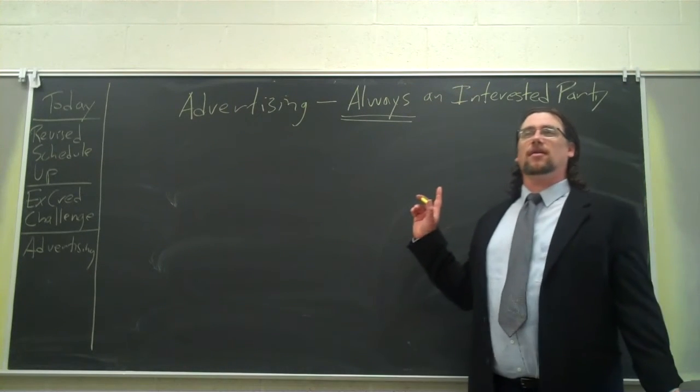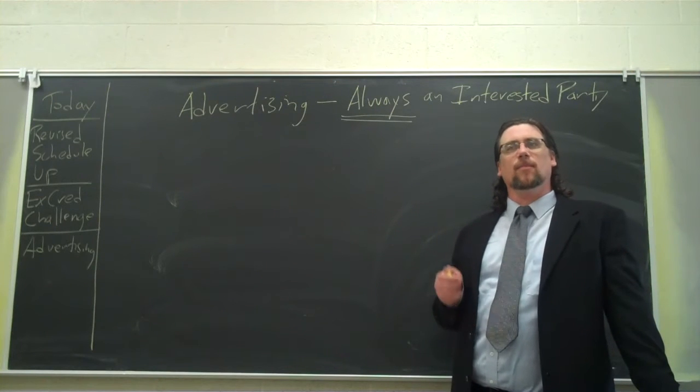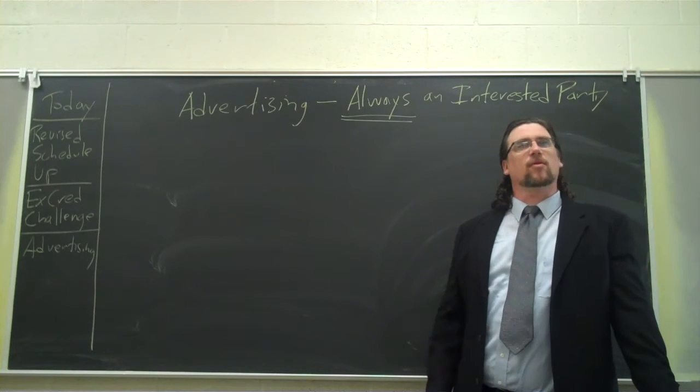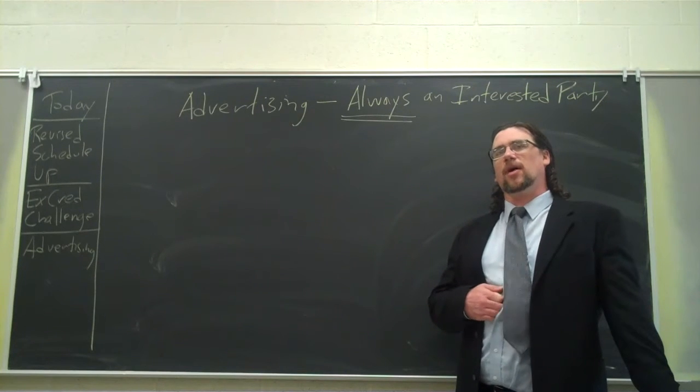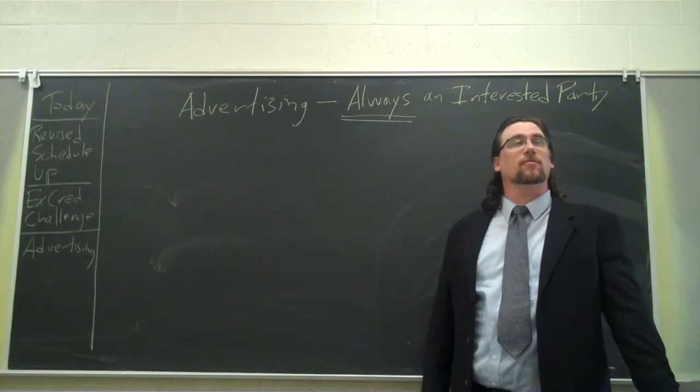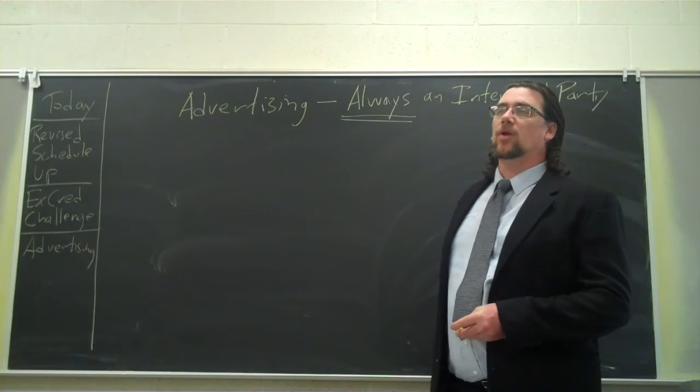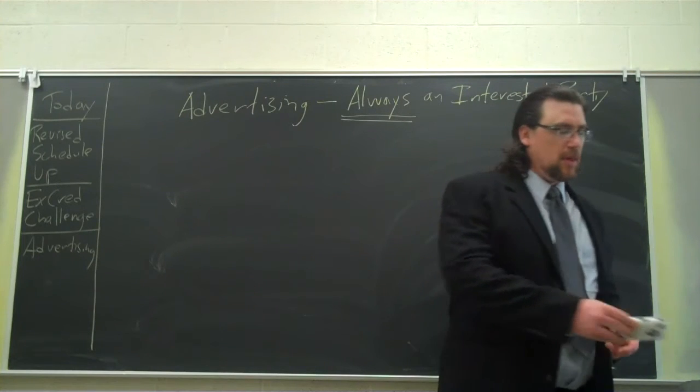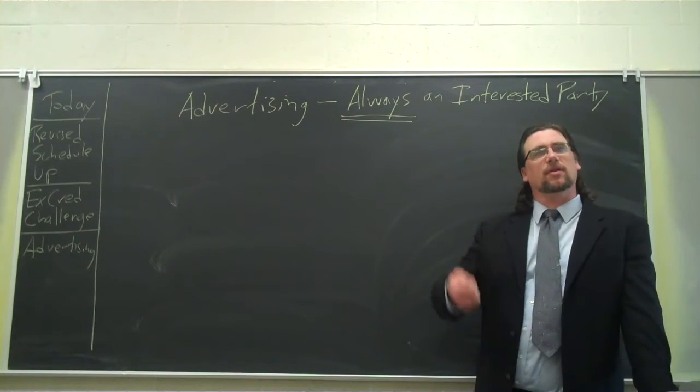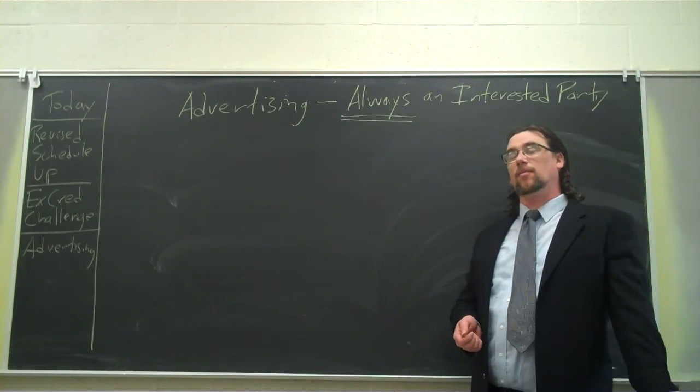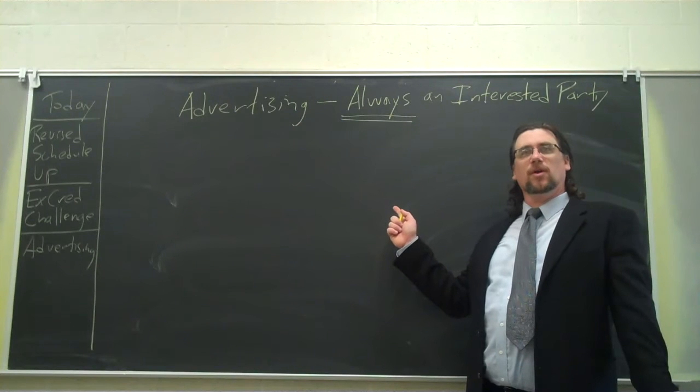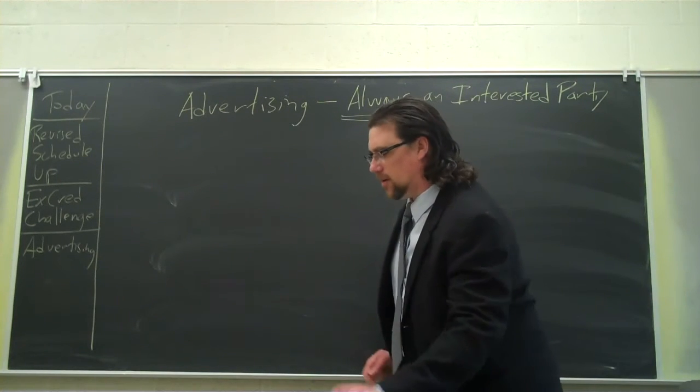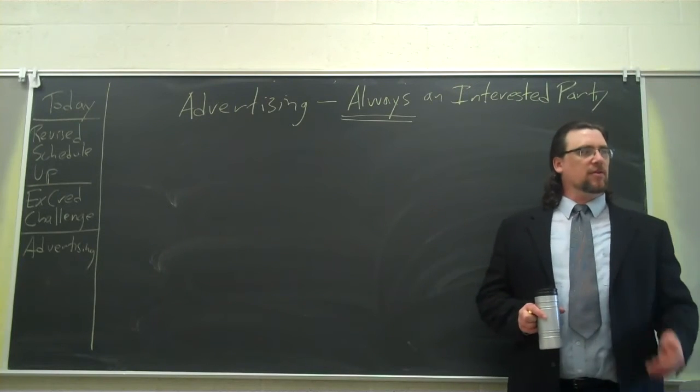Okay, so what we're going to look at today is advertising. We've been looking at where our claims come from, what our information sources are, and to what degree we can trust them. You'll remember a couple lectures ago when I talked about the different types of information sources - personal experience, background knowledge, media, experts. Now we're going to look at advertising. Why does the book give it its own section? Well, two reasons.